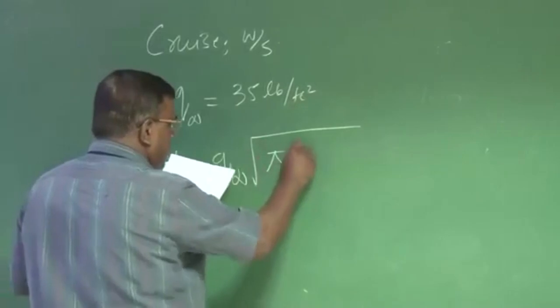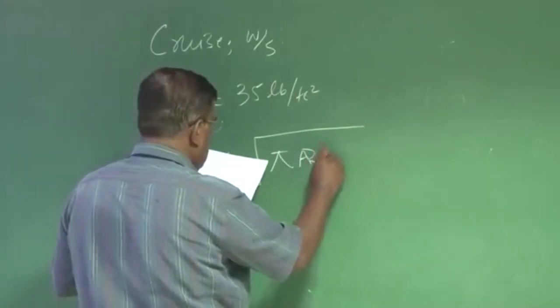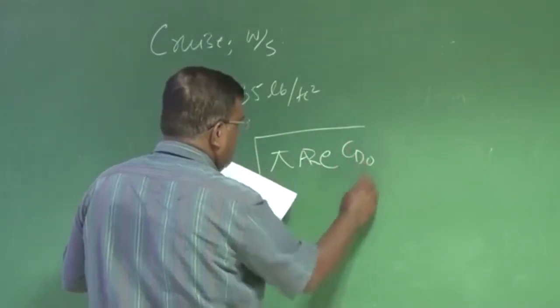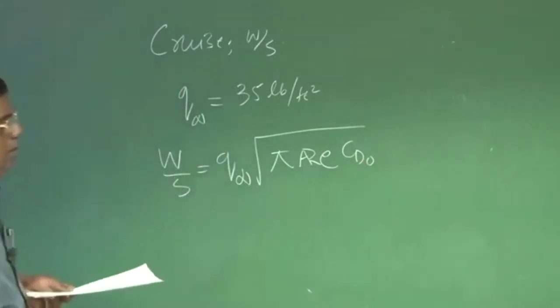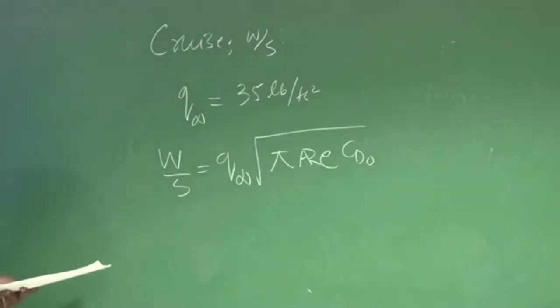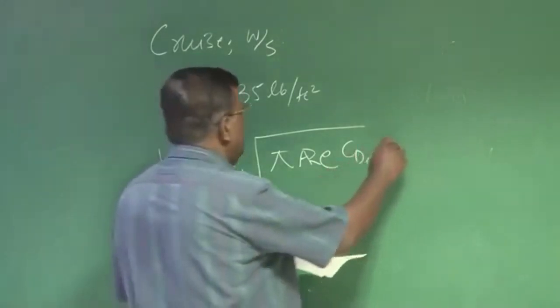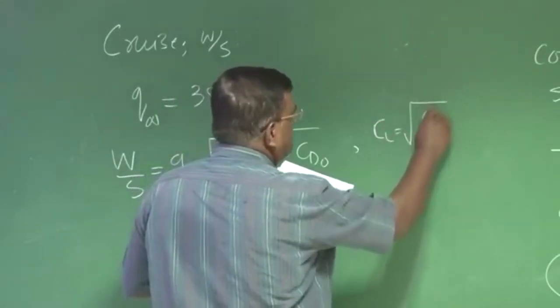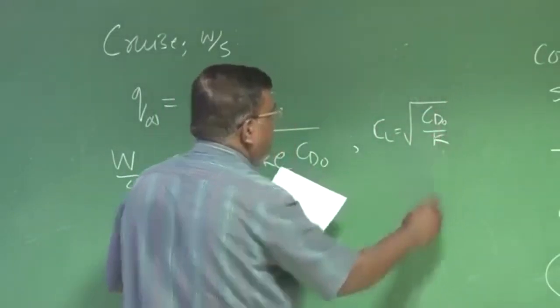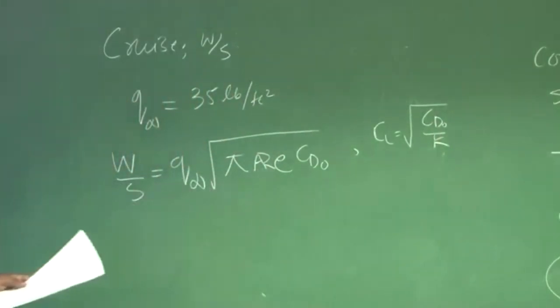And what is this condition? This condition is for maximum range, where we are assuming CL equal to under root CD naught by K. From there, this expression has come. Aspect ratio at conceptual stage, you have some number, you have some numbers, CD naught 0.02, and CL is fixed, CD naught by K.